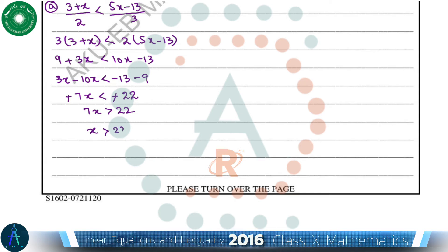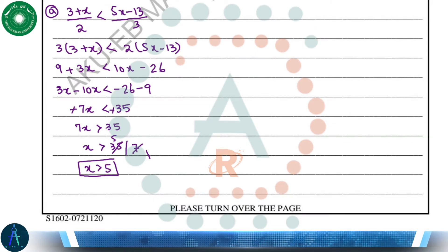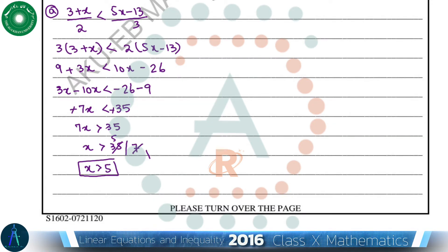Let's make a correction: 2 multiplied by 5x is 10x and 2 multiplied by 13 is 26. As we have solved that way, we get x that is greater than 5, and x belongs to real numbers.